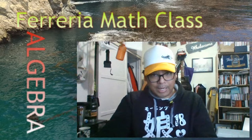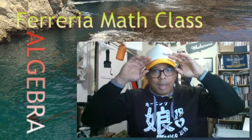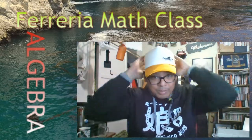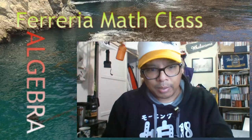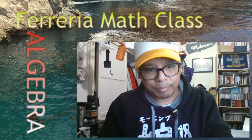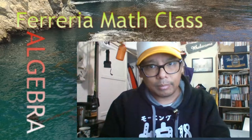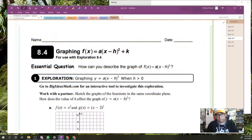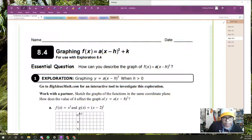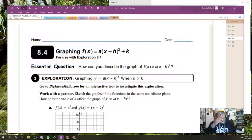You know what a vertex is, so when I say vertex form, that means that this form better have something to do with a vertex. Here's vertex form: y equals a times the quantity x minus h squared, plus k.